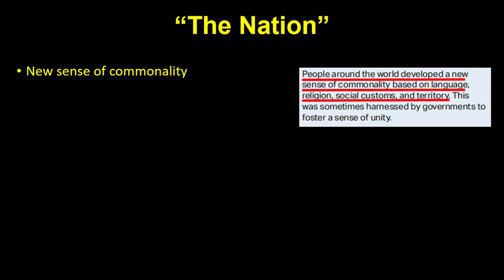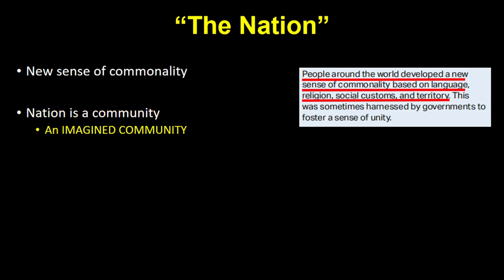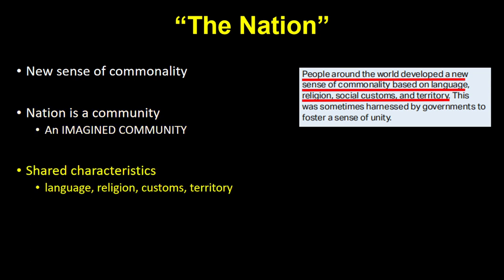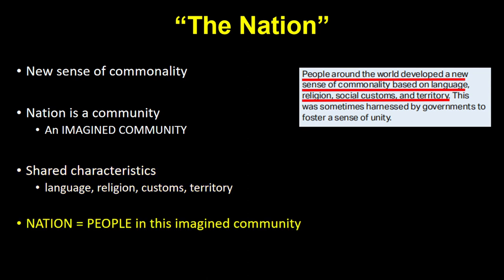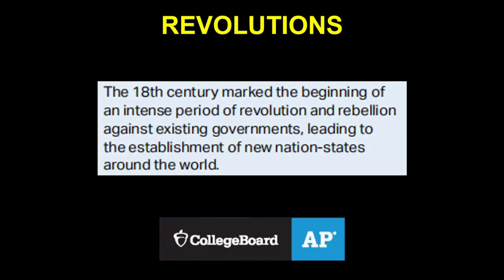People around the world developed a sense of commonality based on various factors. A nation is an imagined community based on a set of shared characteristics — it may not include all, but should include some: language, religion, social customs, and territory. It's imagined because it's a community too big for its members to actually know each other. The 18th century marked the beginning of an intense period of revolution and rebellion against existing governments, leading to the establishment of new nation-states around the world.